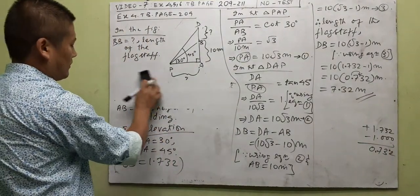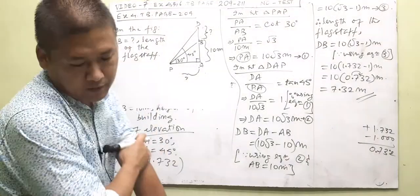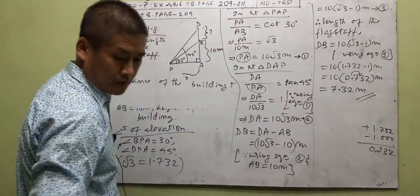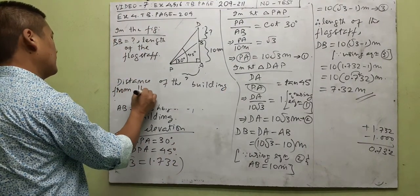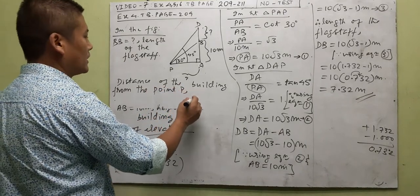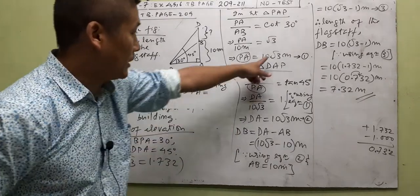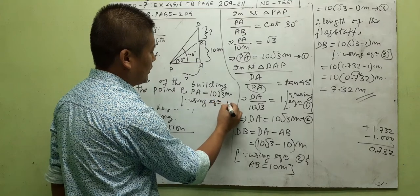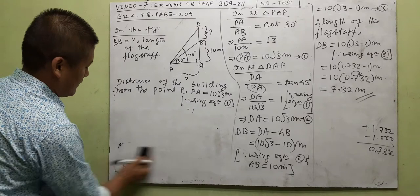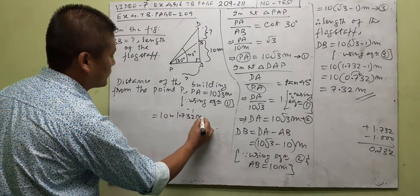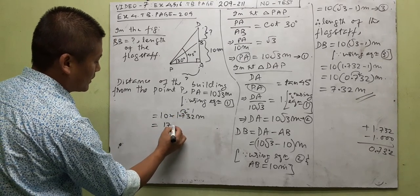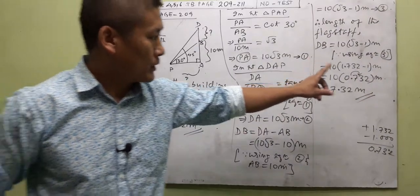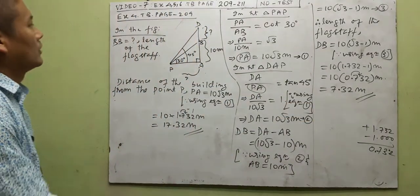They also ask for the distance of the building from point P, which is PA. From equation one, PA equals 10 root 3 meters. Substituting root 3 = 1.732: 10 into 1.732 = 17.32 meters approximately. So the distance of the building from point P is 17.32 meters. Those are the two answers for Example 4. Now let's go to Example 5.